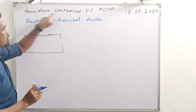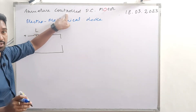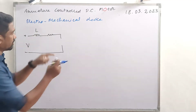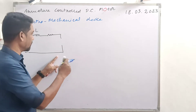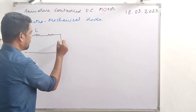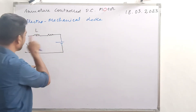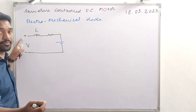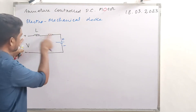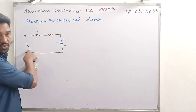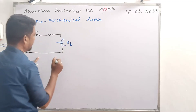In an armature controlled DC motor, counter EMF is produced. This arrangement generates a back EMF against the input. It is called counter EMF. The transfer function derivation will focus on this.